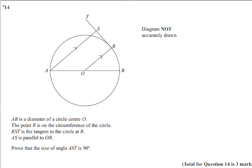Question 14. AB is a diameter of a circle centre O. The point R is on the circumference of the circle. RST is a tangent to the circle at R. AS is parallel to OR. Prove that the size of angle AST is 90 degrees.